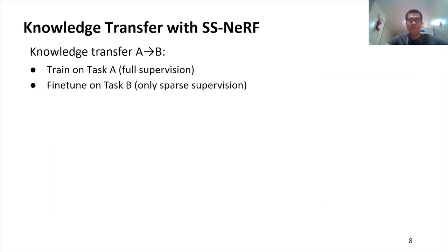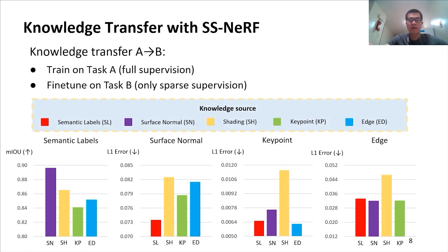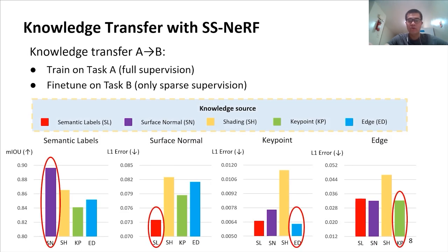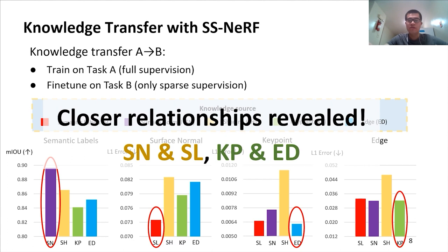Next, we explore the relationships of our chosen tasks via transfer learning. The best results are highlighted here, which reveal that some tasks are more closely related than others. For example, surface normal and semantic labels are more closely related, as are edge and key point.